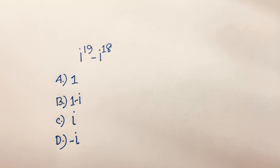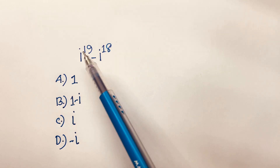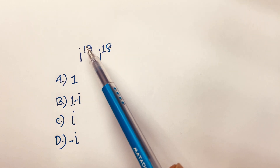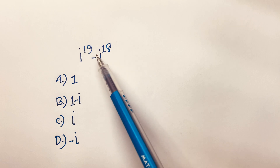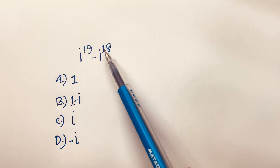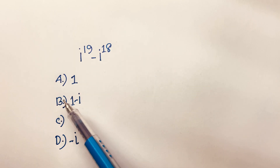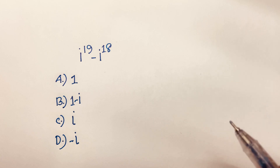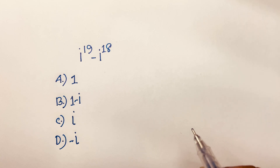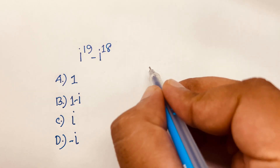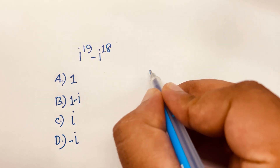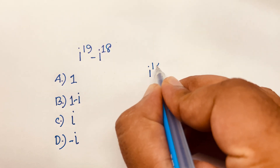How to solve this complex number question: i to the power 19 minus i to the power 18 is equal to what? Here are four options — we'll find out what is the right option.